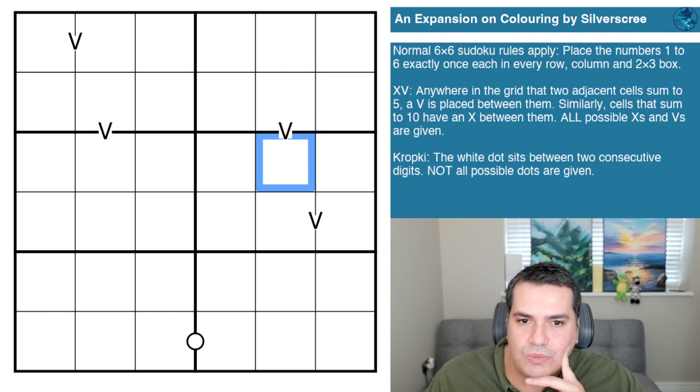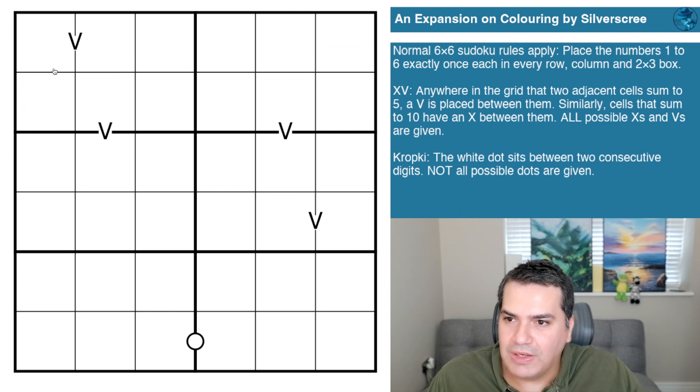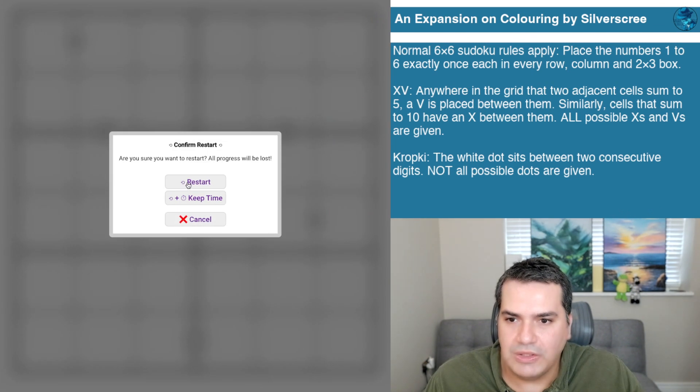But somehow with this limited rule set and empty grid, we're meant to be able to solve this entirely using logic. If you're up for the challenge and want to color this grid together, link will be in the description below. With that said, let me restart the clock and see how we get on.